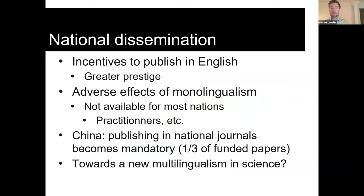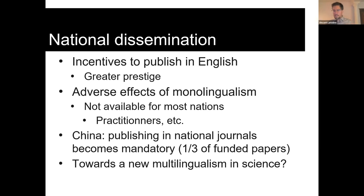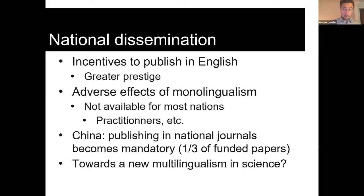Accessibility is important, but the language in which papers are published also matters. Historically, the scientific community in non-English-speaking countries has been incentivized to publish in English because of the prestige associated with it. We then realized there were adverse issues from such monolingualism — research simply isn't available for practitioners and researchers in most nations. China was one of the first countries to react, mandating about three years ago publication in national journals for about a third of their funded papers, so that national communities and practitioners could understand what was happening with the pandemic. This may have planted a seed for greater multilingualism, which should improve availability of research — particularly for SDGs and climate change, which have a strong social science component.